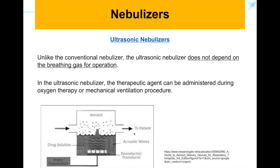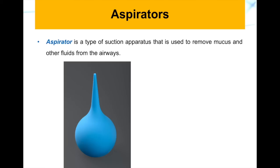The last apparatus we are going to talk about is the aspirator. An aspirator is a type of suction apparatus used to remove mucus and other fluids blocking the airway. This is a passive aspirator. There are also active aspirators shown in the slide, which are electrical devices used in the ICU and for emergency, higher-risk procedures.